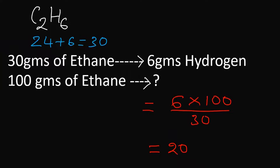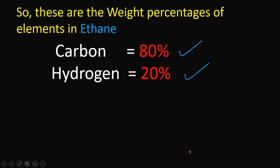Similarly, for hydrogen: 30 grams of ethane has 6 grams of hydrogen. 100 grams of ethane has: 6 × 100 ÷ 30 = 20. So the percentage composition of carbon and hydrogen in ethane are 80 and 20, respectively.